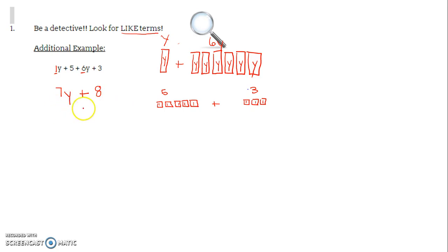Those are not like terms. I can't shove them together. Our y's, we know, are in the shape of a rectangle, if we want to look at our visual. And our constants are these little squares. You can't try to shove those together. So your final answer would be 7y plus 8. You just add your y's together. 1y and 6y would give us our 7y. And then we have our 5 plus our 3 gives us our 8. And how are they attached? They're attached through addition. I hope that helps.